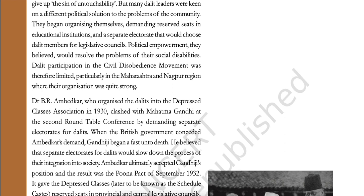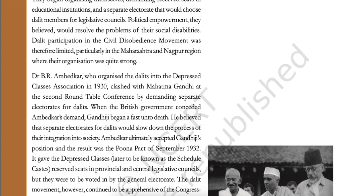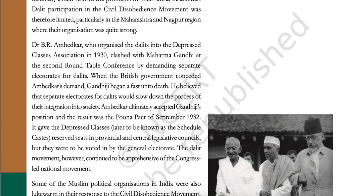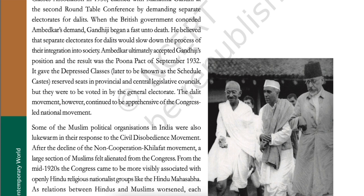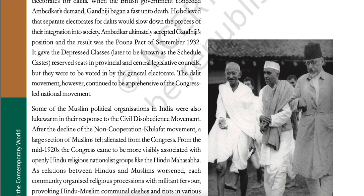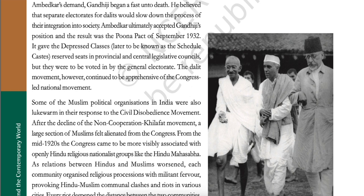Dalit leaders began organizing themselves, demanding reserved seats in educational institutions and separate electorates that would choose Dalit members for legislative councils. Political empowerment, they believed, would resolve the problems of their social disabilities. Dalit participation in the civil disobedience movement was therefore limited, particularly in Maharashtra and the Nagpur region where their organization was quite strong. Dr. B.R. Ambedkar, who organized the Dalits into the Depressed Classes Association in 1930, clashed with Mahatma Gandhi at the Second Roundtable Conference by demanding separate electorates for Dalits. When the British government conceded Ambedkar's demand, Gandhiji began a fast unto death. He believed that separate electorates for Dalits would slow down the process of their integration into society.